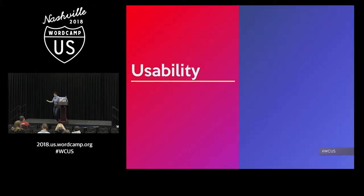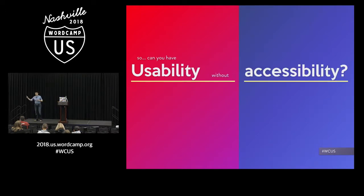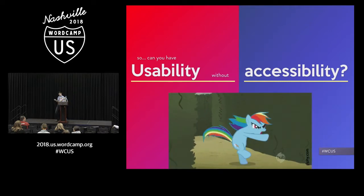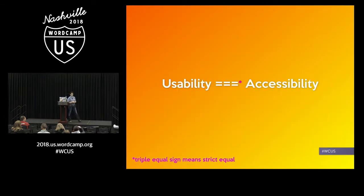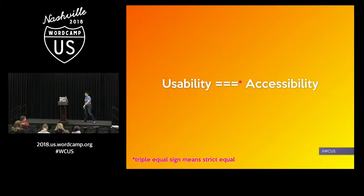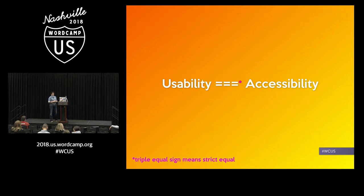So usability — we talk about usability, usability is one and the same with what we talk about in user experience. So I pose a question: is it possible to have usability without accessibility? I will challenge anyone, but I absolutely say no. I think they are literally one and the same — and just a side note, the triple equals in development means really, really, really equal. So not only are usability and accessibility one and the same, there's also a strong link between products that are more accessible and usable and diverse teams.